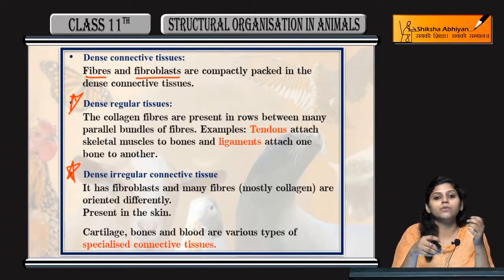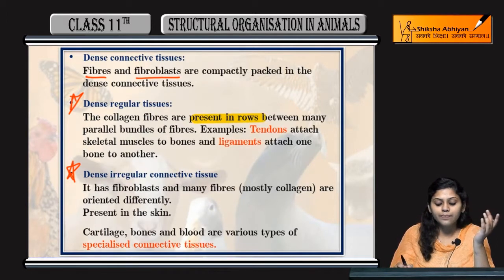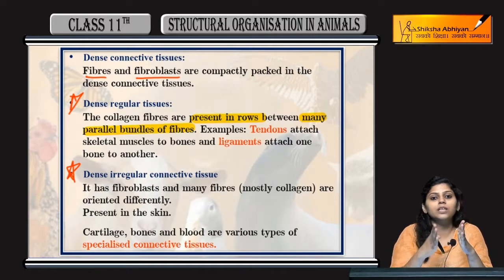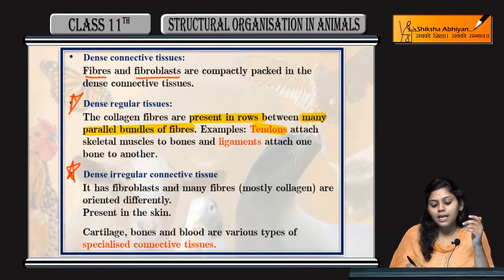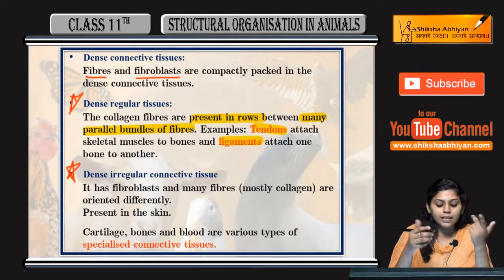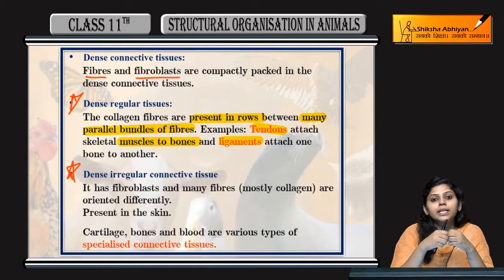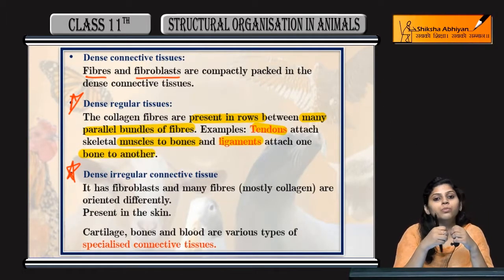Dense regular tissues woh regularly arranged honge. They are present in rows between many parallel bundles of fibers - regularly arranged, eek ke baad eek cell present ho ga. Examples hain tendons and ligaments. Joh tendons hain woh muscle to bone attachment kerti hain, aur ligaments hootay hain bone to bone attachment.